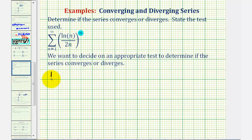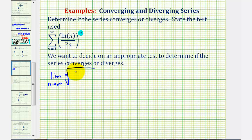So we want to find the limit as n approaches infinity of the nth root of the absolute value of a sub n — or just a sub n in this case — which is natural log n divided by 2n, raised to the power of n.